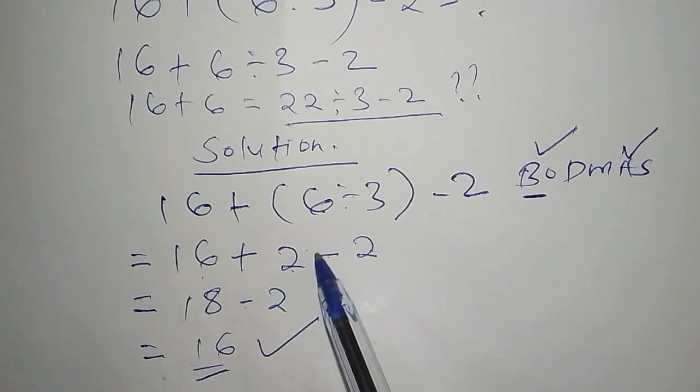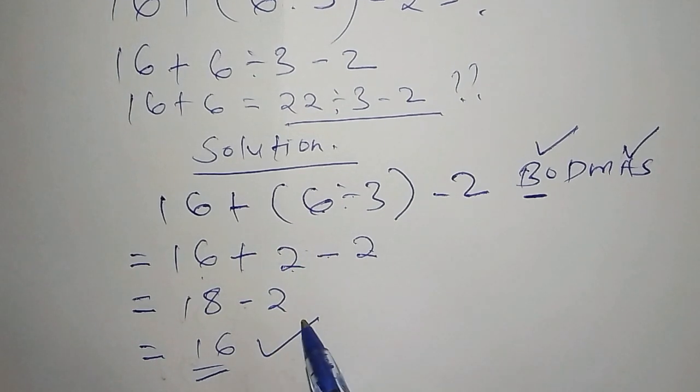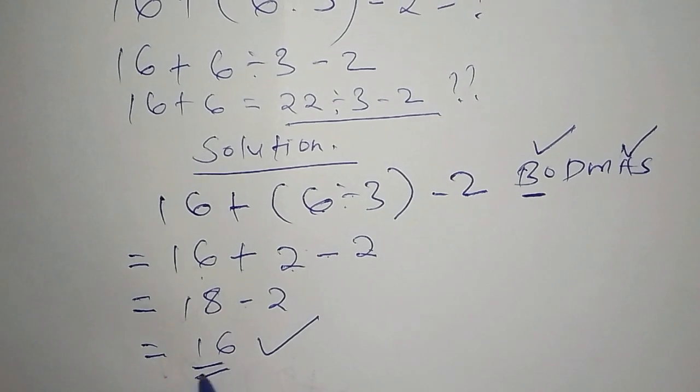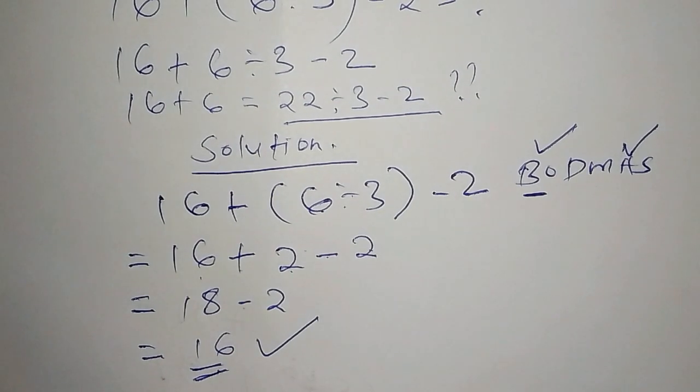When you say 2 - 2 and write 0, the answer might be correct but the steps you used are not correct. That's why you might not get the correct answer. The answer is 16. Let's stop there, see you in our next video, bye bye.